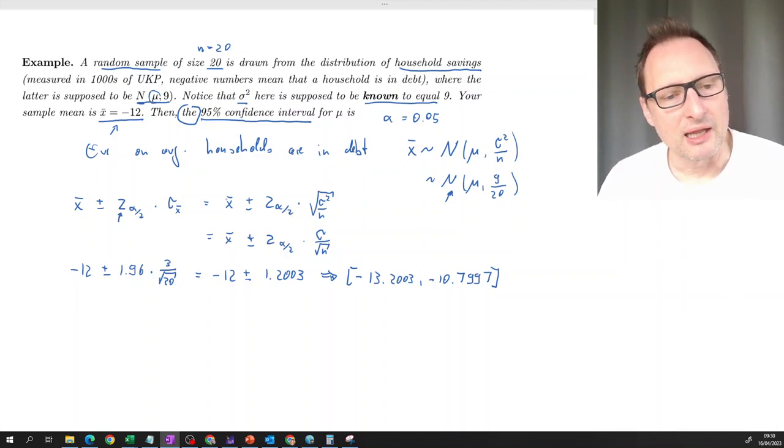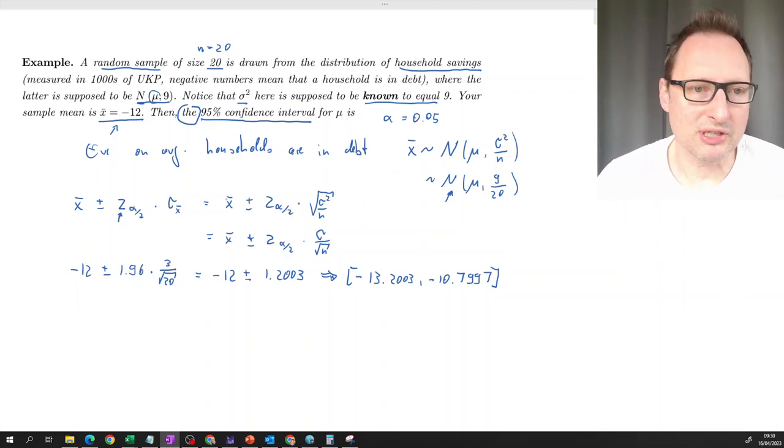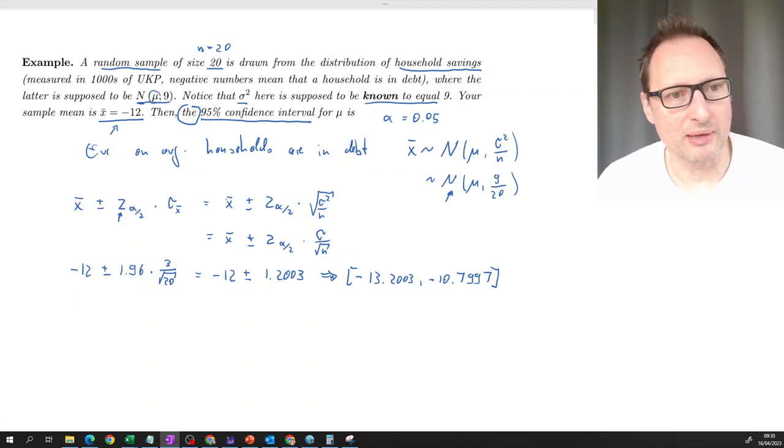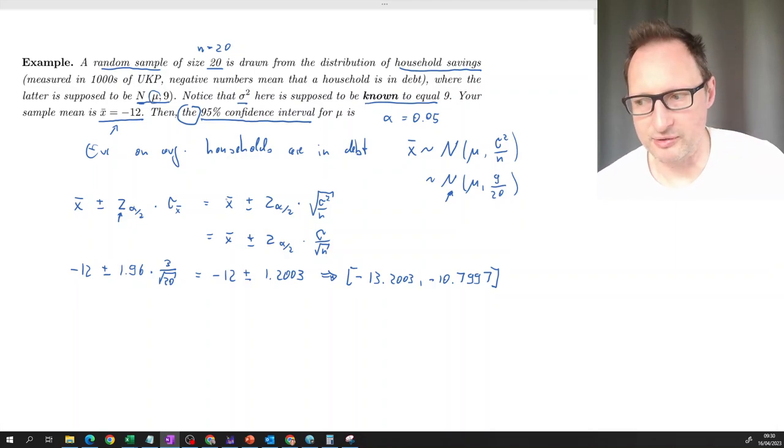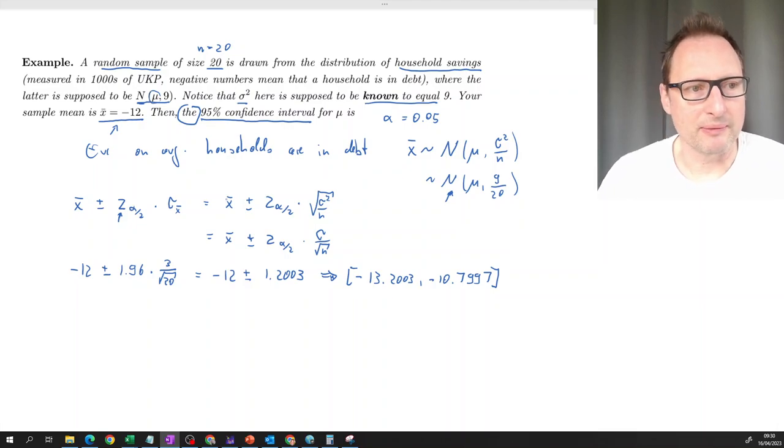And that infamous confidence interval goes from negative 13.2 to negative 10.8 approximately. But what's this 95% mean here? It means that if we took 100 samples of this type with sample size 20, we should expect that 95% of these actually contain the unknown population mean. Whether our particular sample is one of the 95% or one of the 5% we don't know. So that's important to understand how this is interpreted. It's a slightly awkward interpretation of confidence intervals.